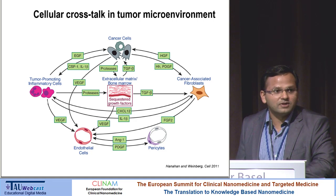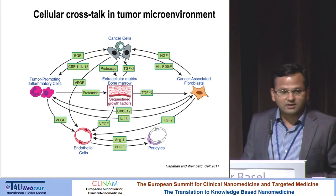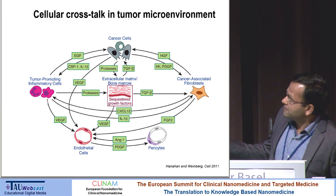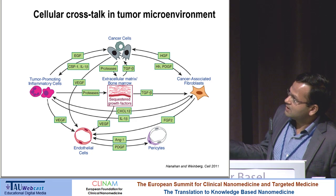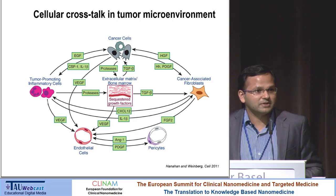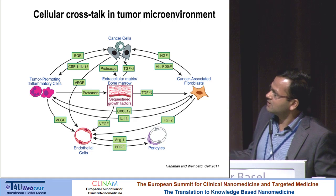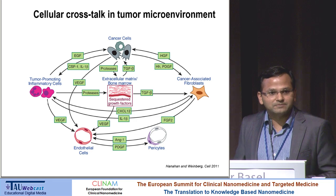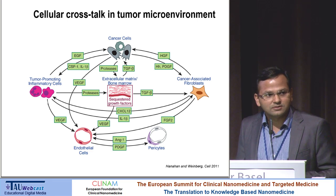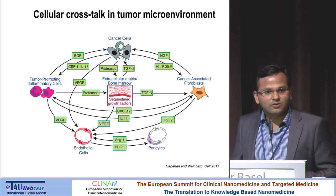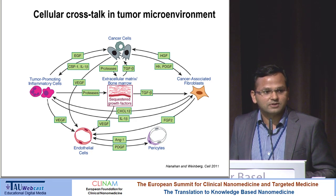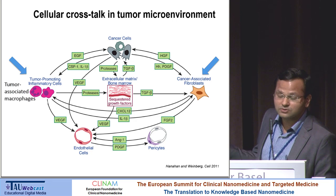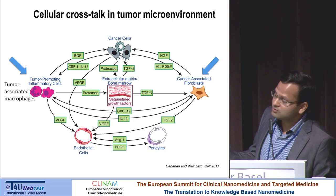You have heard a lot about the tumor microenvironment. There are around 15 to 16 different types of cells other than tumor cells, including about 10 different types of inflammatory cells, and they communicate extensively among each other. The whole environment educates all cells — first, tumor cells educate the other cells, and after that they all make the tumor environment permissive for growth and metastasis. We are focused on just two cell types: cancer-associated fibroblasts and tumor-associated macrophages.